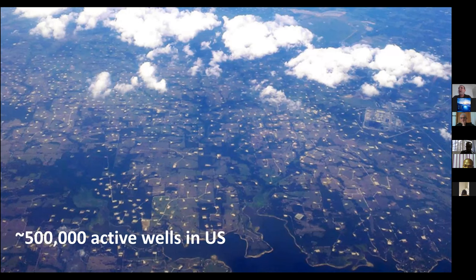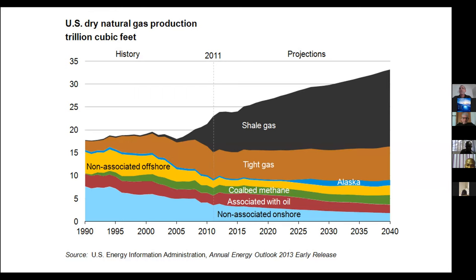If you look at the US in general, there are about half a million active wells — that's a huge number. Looking at US gas production, along the x-axis we have years from 1990 projected into the future, and along the y-axis production in trillion cubic feet. Around 2008 or 2009, shale gas suddenly starts increasing in production. That really turned the United States from a gas importer to a gas exporter. The projection is that shale gas production will continue to increase into the future.